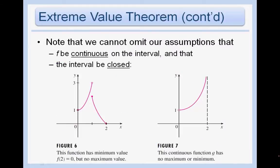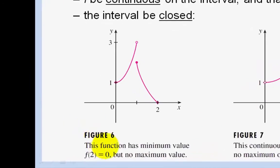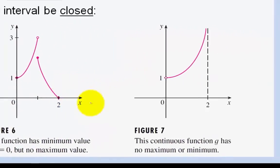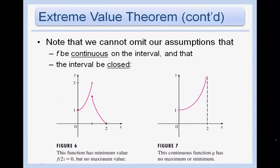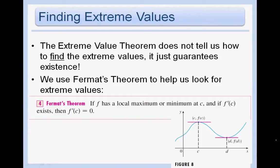We cannot omit the assumption that f is continuous on the interval and that the interval be closed. In figure 6, the function has a minimum value f(2) = 0 but no maximum, because the function is not continuous. In another case, a continuous function defined on an open interval has no absolute max or min, because we are not on a closed interval. The Extreme Value Theorem does not tell us how to find extreme values — it only guarantees they exist.